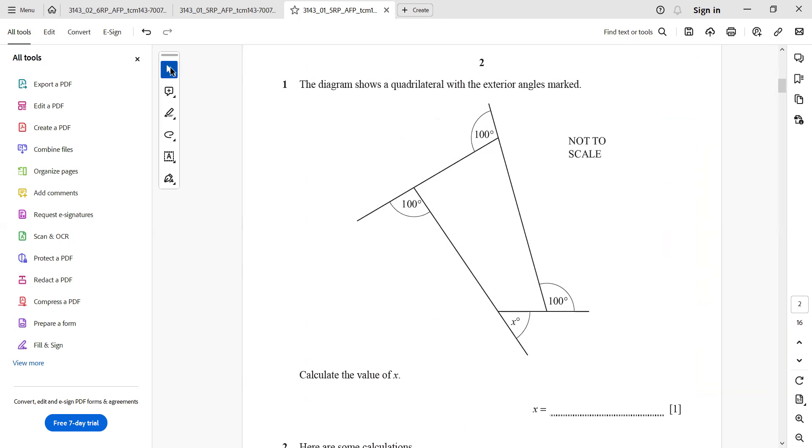We start off from question number 1. It states that the diagram shows a quadrilateral with the exterior angles marked. You can see a quadrilateral, a four-sided diagram in front of us, and we are given with its exterior angles. Each of them is 100 degrees. So we need to calculate an exterior angle that is marked x.